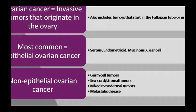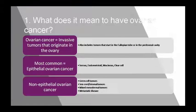Surface epithelial stromal cell tumors account for 65-70% of cases. Malignant ovarian tumors make up 90% of this category. The subtypes include serous tumor, mucinous tumor, endometroid tumor, clear cell tumor, Brenner tumor, and cystadenofibromas.